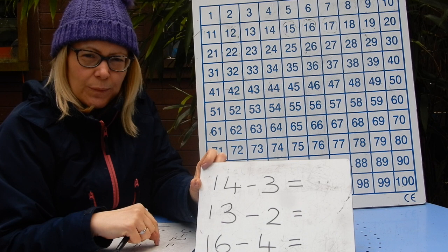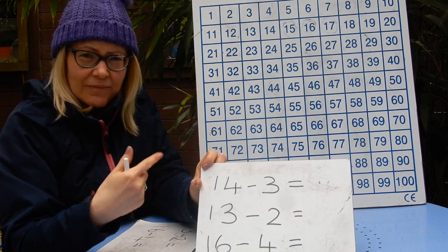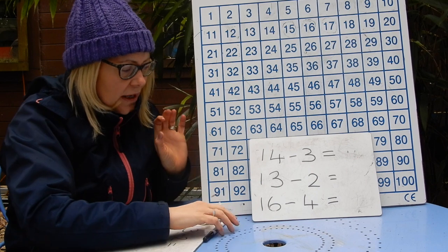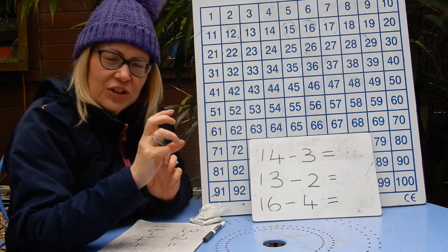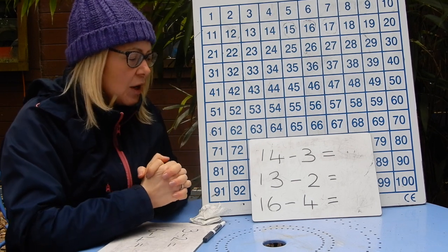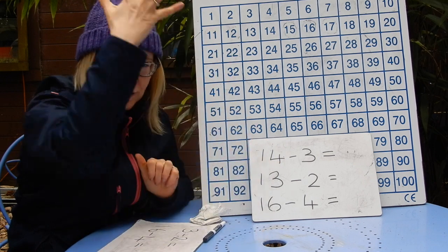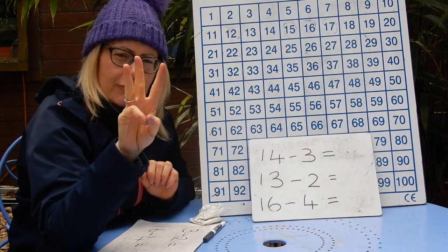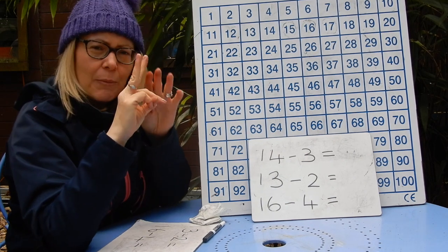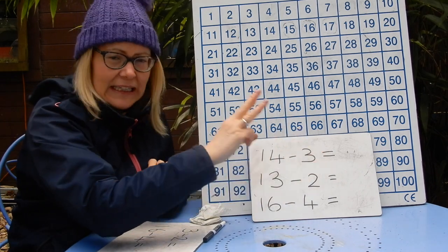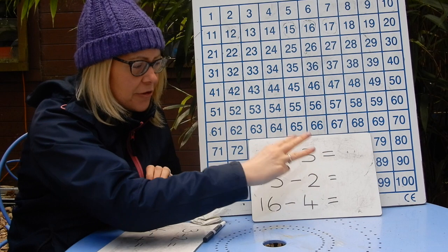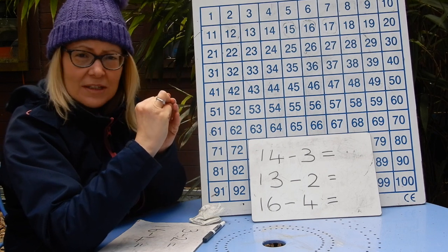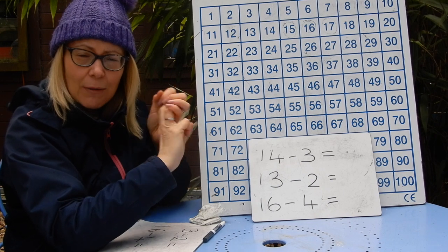I'm also going to show you how to do it a slightly easier way if three questions look too much. So these are your three questions. When you're doing taking away there are three options. The first one we said yesterday was to put the first number in your head — so 14 is in my head — and then I am taking away three. I put up three fingers, because that's what I've got to count backwards. I'm taking away three, not four.